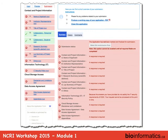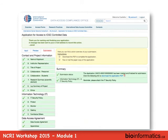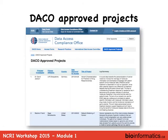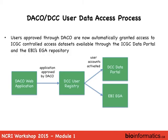When you validate the form without having signed off on everything, everything shows red. Once you check off all items properly, the validation gives you a green light and allows you to print a PDF, which you sign and send to the DACO office. Once approved, your project appears on the list of DACO-approved projects. You then need to go through a similar independent process to get access to TCGA data, which also now has a cloud component.